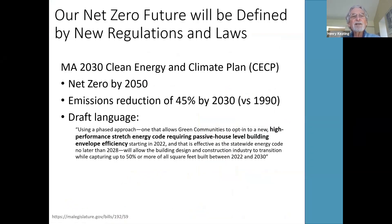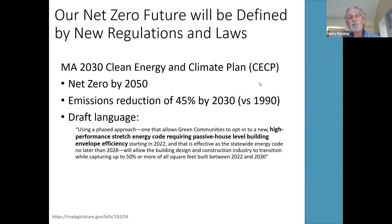We have a lot of passive house work coming down the pike and we need now to really marry it to net zero. Our net zero future is going to be defined by new regulations and laws. There's been enough advocacy done in this state to get to the point where we have a draft 2030 Clean Energy Climate Plan that calls for net zero by 2050 and a 45% reduction below 1990 levels by 2030. The language requires that DOER put together a high-performance stretch energy code requiring passive house level building envelope efficiency that's available for communities by 2022.